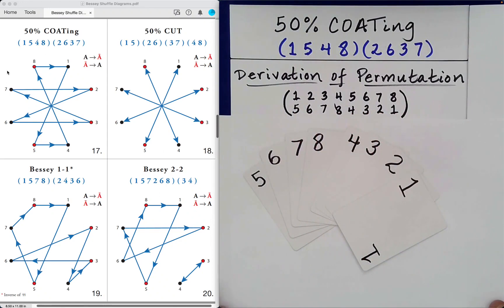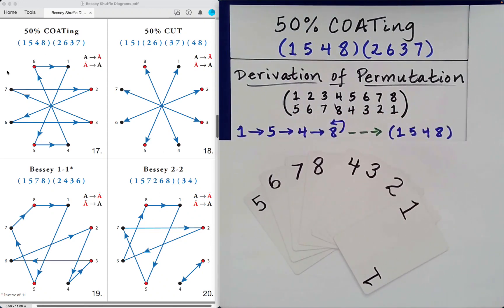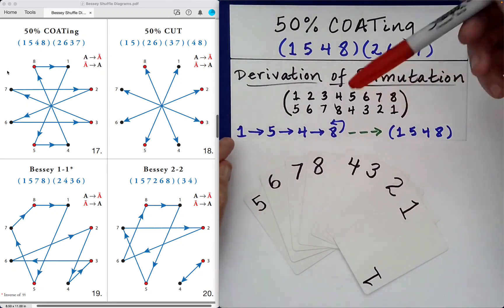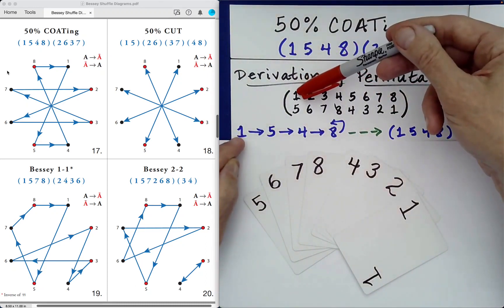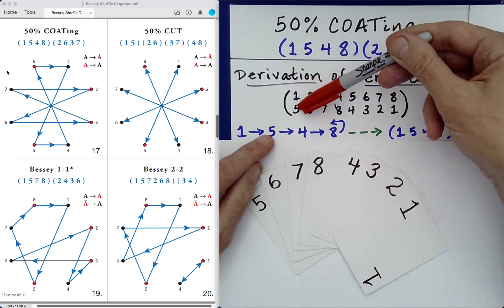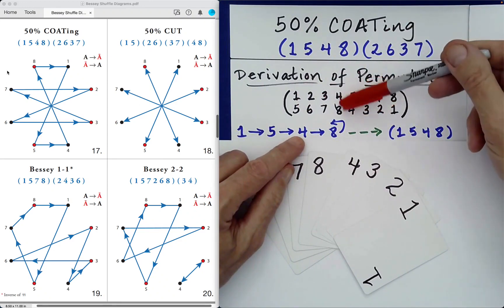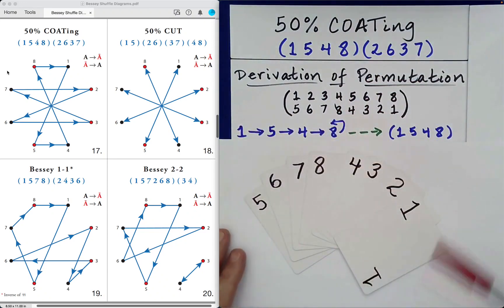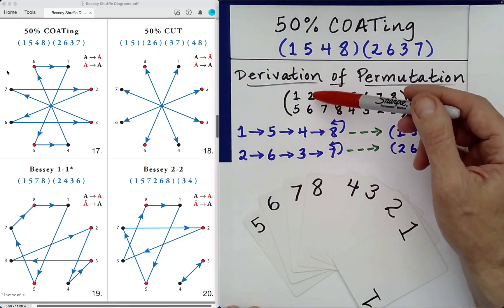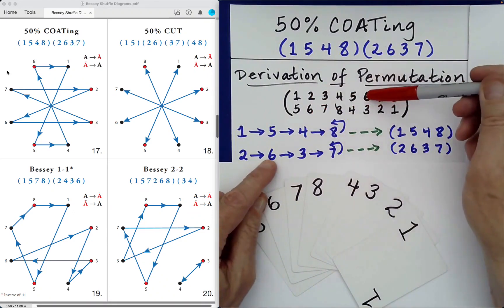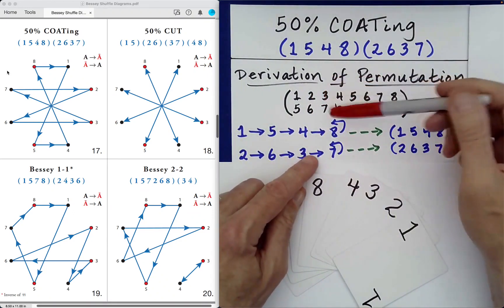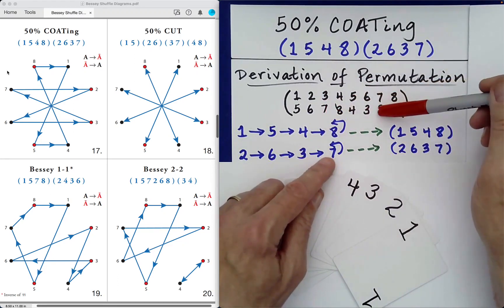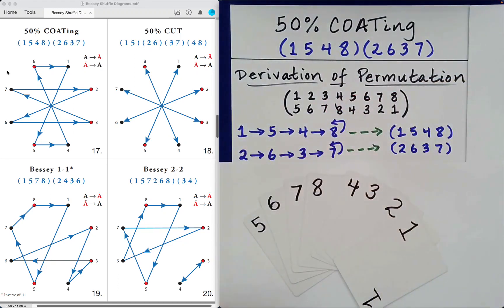Cauchy's 2 line notation can now be written in 1 line notation, also called cycle notation. Recall how this works is we see that 1 goes to 5, so there's an arrow from 1 to 5. 5 over here goes to 4. 4 goes to 8. And then 8 goes to 1, so it wraps around, completing a 4 cycle: 1, 5, 4, 8. Looking at what happens to the value 2, we see that 2 goes to 6. 6 goes to 3, and 3 goes to 7. And finally 7 goes to 2, so it wraps back around, resulting in a second 4 cycle. This accounts for all 8 digits.